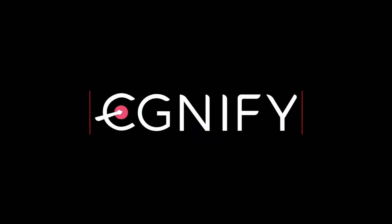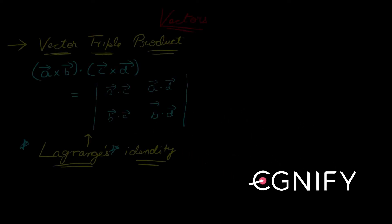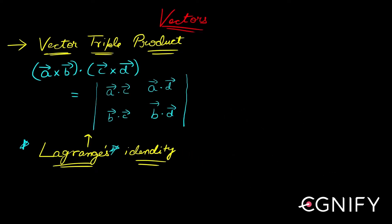Let's move on to this identity called Lagrange's identity. It's not an extremely important identity, but you might get a question directly from this, so it's important, but not extremely so. We will actually sit and prove this, but let's just have a look at it for now.